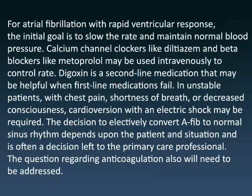For atrial fibrillation with rapid ventricular response, the initial goal is to slow the rate and maintain normal blood pressure. Calcium channel blockers like diltiazem and beta blockers like metoprolol may be used intravenously to control rate. Digoxin is a second-line medication that may be helpful when first-line medications fail.